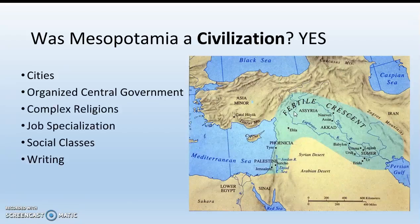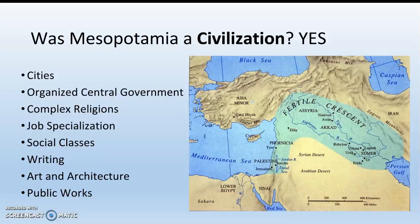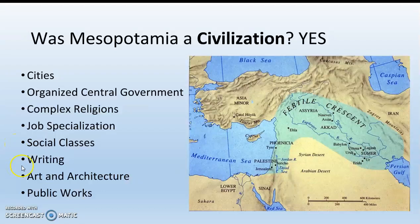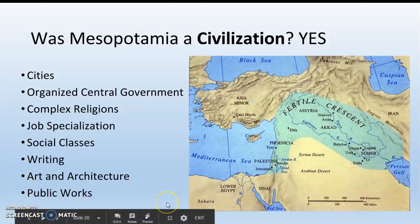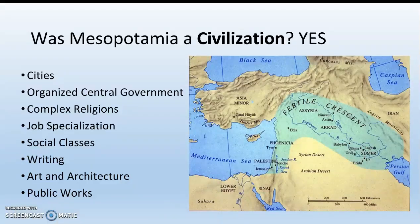The last thing we're going to talk about is the eight components of civilization. For a group of people or society to be considered a civilization, they must have: cities — think about Ur; organized central government — think about the king at the top; complex religion — remember they're polytheists; job specialization — artisans, merchants, kings, nobles, and priests; social classes — who's on top, who's on bottom; writing — that's cuneiform; art and architecture; and public works. Was Mesopotamia a civilization? Yes. And we're going to use these eight key components to evaluate the other civilizations we learn about throughout Unit 1.